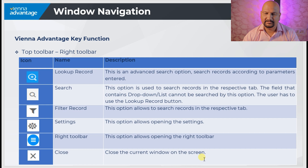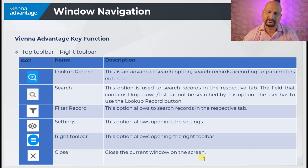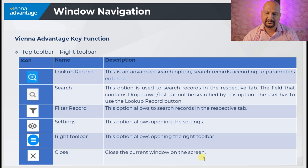Thereafter there is the filter record option, which allows searching records in the respective window. There is a difference between the filter and the lookup record that will be discussed in another video. There is also a settings option, which opens settings so the user can set their preferences.